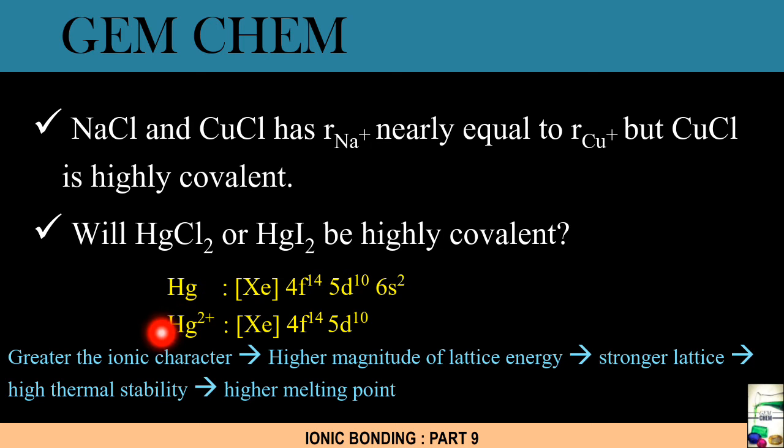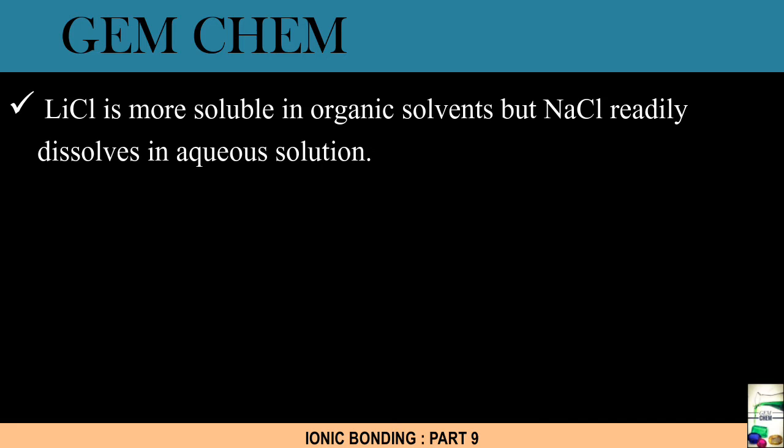From here we can solve many questions. Suppose you are asked that LiCl is more soluble in organic solvents but NaCl readily dissolves in aqueous solution. So what is the reason for this one? We have here two cations - Na⁺ and Li⁺ - and our anion is same, that is Cl⁻. From here only we can understand that the size of Na⁺ is much greater than Li⁺. This is smaller in size.